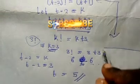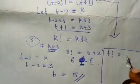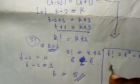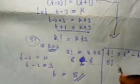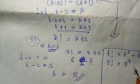And let's verify it. This is the question now. The question says t factorial is equal to t raised to the power of 3 minus t. So, since t is equal to 5, we have 5 factorial to be equal to 5 raised to the power of 3 minus 5.